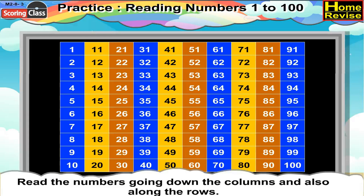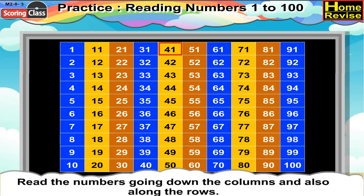The next column, the top number is 21 and from top to bottom it is 21, 22, 23, 24, 25, 26, 27, 28, 29, 30. Next from top to bottom the column is 31, 32, 33, 34, 35, 36, 37, 38, 39, 40. The next column from top to bottom is 41, 42, 43, 44, 45, 46, 47, 48, 49, 50. The next column top to bottom is 51, 52, 53, 54, 55, 56, 57, 58, 59, 60.